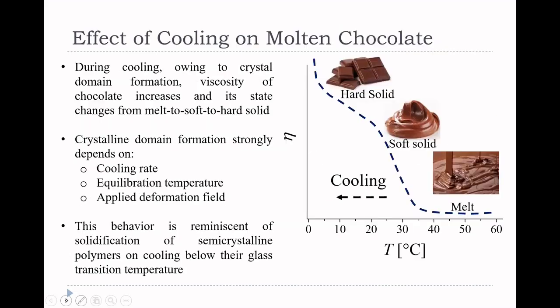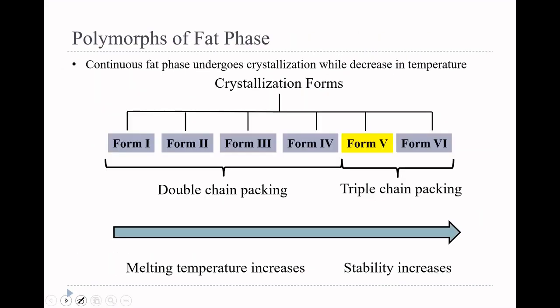When chocolate is in the molten state at high temperature and we cool it down, crystal domain formation takes place. By virtue of its inherent dependence on temperature as well as crystal domain formation, the viscosity of chocolate increases and its state changes from melt to soft solid to hard solid. Crystalline domain formation strongly depends on the cooling rate, equilibrium temperature, and the applied deformation field. This behavior is reminiscent of solidification of semi-crystalline or amorphous polymers on cooling below their glass transition temperature.